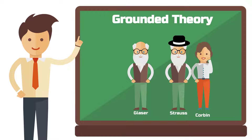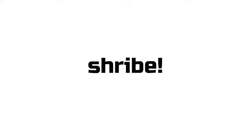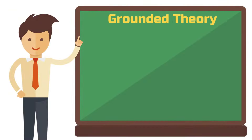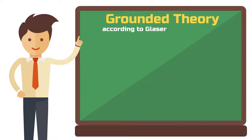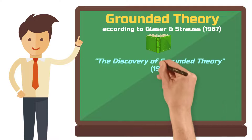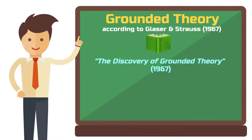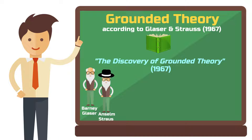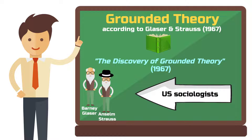Or a completely different author. And now, without further ado, welcome to Schreib. It all began with a book that made its mark in the history of science. This book is called The Discovery of Grounded Theory and was published in 1967.